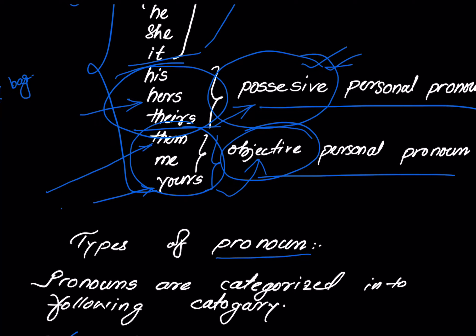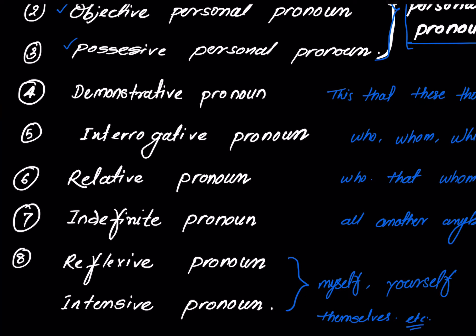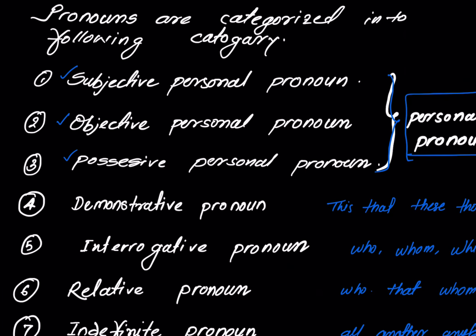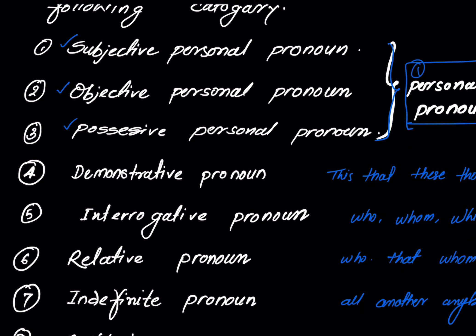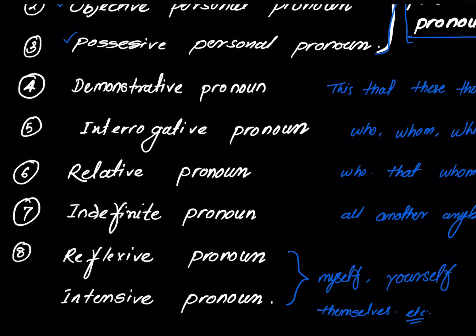For example: 'I told them' — here 'them' is objective. 'He told me' — 'me' is objective. 'Yours' is possessive. You can put all three under one first type, or keep them separate — I have simplified it that way.